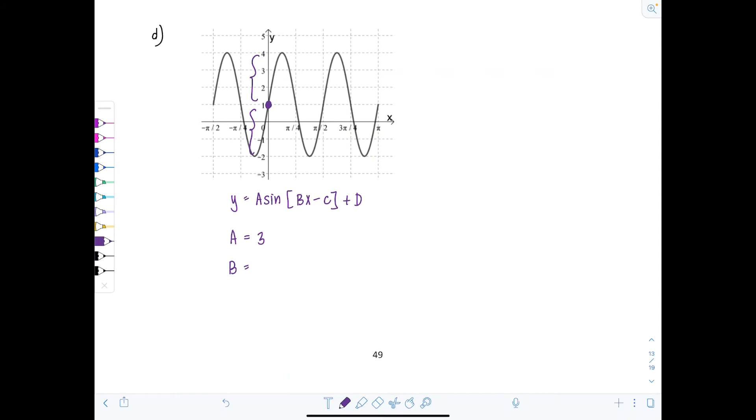Well, you can count from peak to peak or min to min or think about the five key points. There's one, two, three, four, five, and that's at pi over 2. So that means one period is equal to pi over 2.